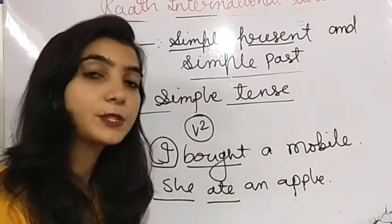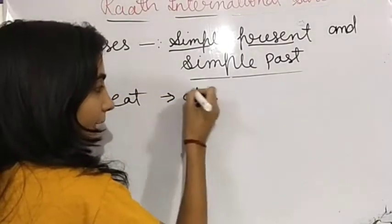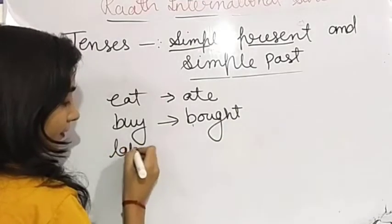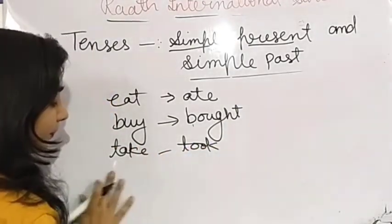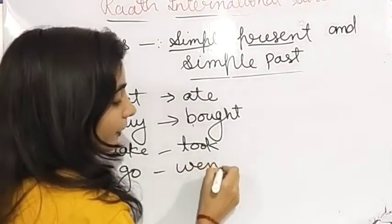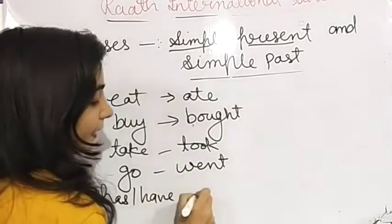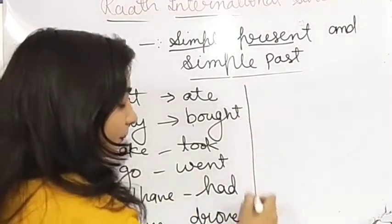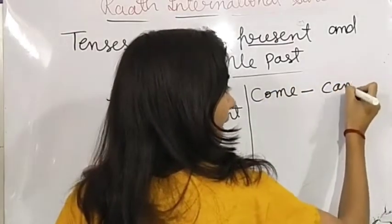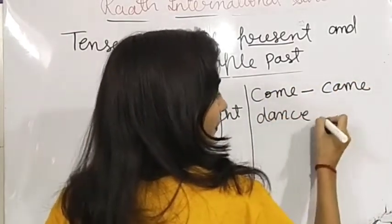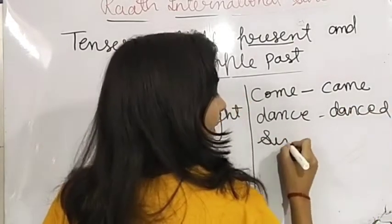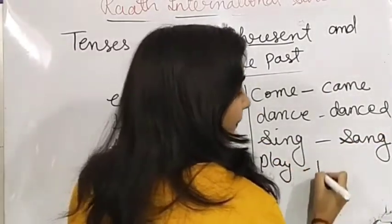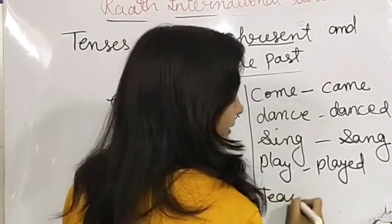Let me give you the past forms of some verbs: eat → ate, buy → bought, take → took, go → went, have → had, come → came, dance → danced, sing → sang, play → played, teach → taught.